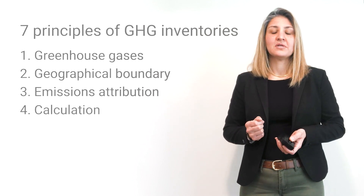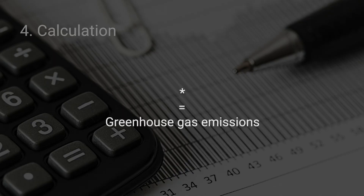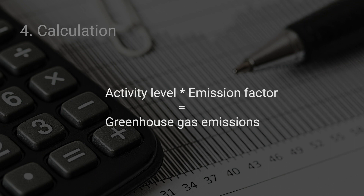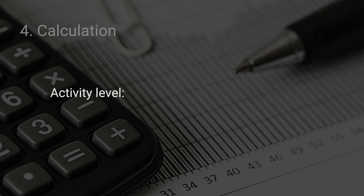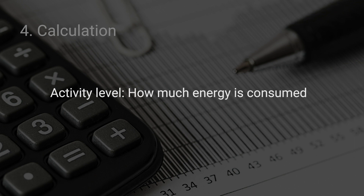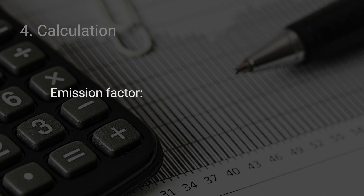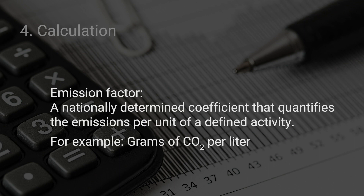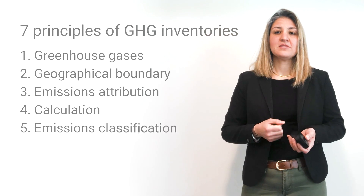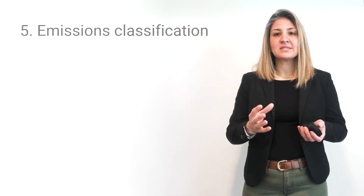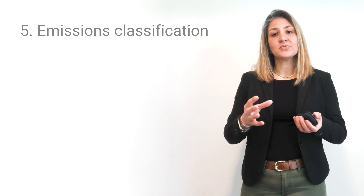Fourth is the calculation. The calculation is relatively simple: greenhouse gas emissions is a multiplication of two factors — activity level and emission factor — though there is a lot of sophistication and complexity that goes into coming up with those numbers. Activity level is the number that measures how much energy is consumed; it could be gigawatt hours of electricity or kilometers traveled for transportation. Emission factor is a measure of the carbon intensity of the fuels — for example, grams of CO2 per liter of fuel for transportation, or grams of CO2 per kilowatt hour for the cleanliness of the electricity mix.